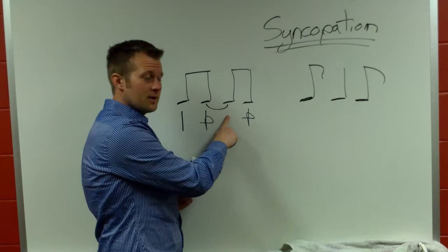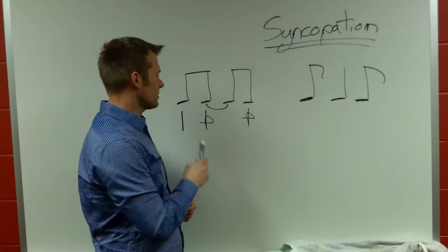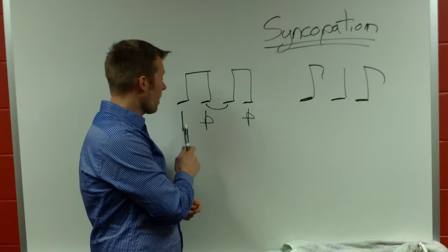So, beat two is kind of hidden in this note right here because it's tied. So, we will think two, but not say it. So, this rhythm would be one and, and. You can say it with me. One and, and.